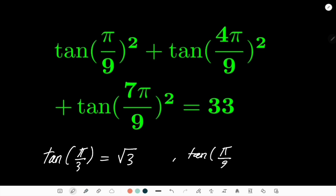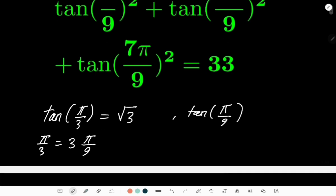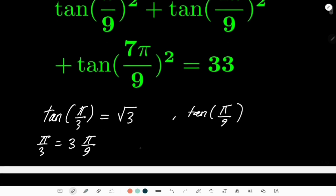Basically, π/3 is 3 times π/9. So maybe if I consider this famous identity for tan(3α) and write the expression for it, maybe I can derive some relationships which can help me prove this identity.